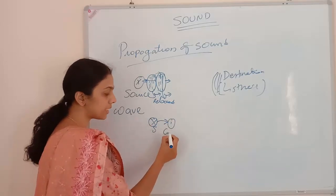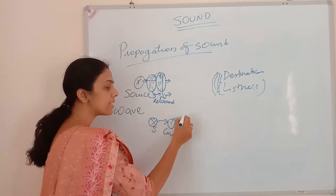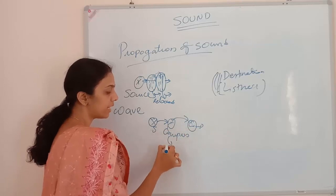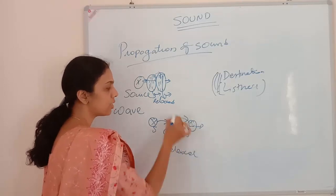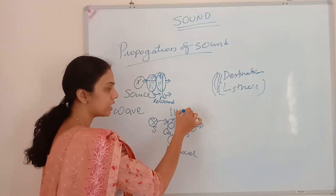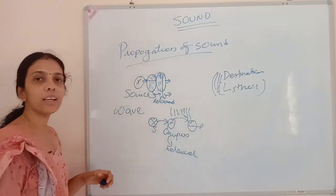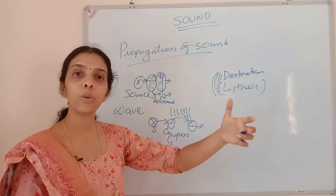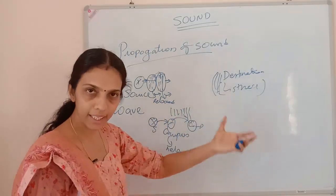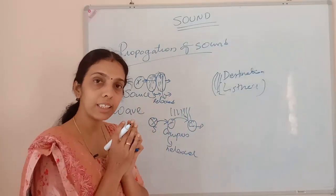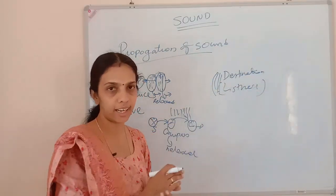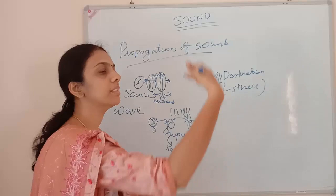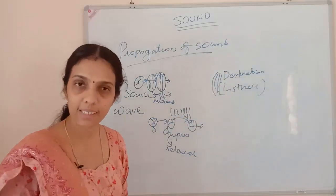So from the source, the sound energy passes to the next particle. It gets compressed, transfers the energy to the next one, and gets relaxed. Then it gets compressed again and relaxed again — this continuous process happens. While the wave is traveling from one point to another, the whole energy is not picked up and carried; it is transferred to the next particle, then to the next one, then to the next — that is how the sound wave travels.